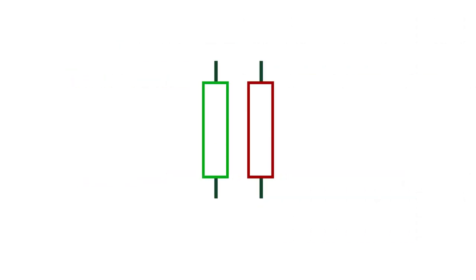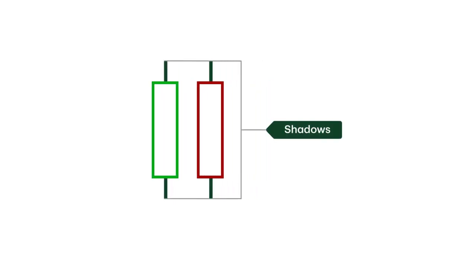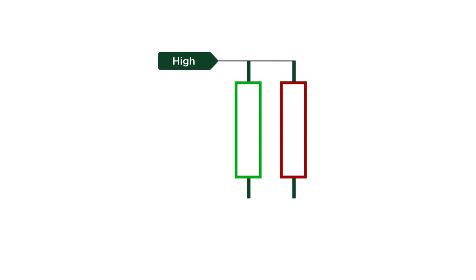Two vertical lines at the top and the bottom of the real body represent the day's high and low prices. These lines are called shadows. The tip of the upper shadow tells us the high price of the day, and the tip of the lower shadow tells us the low.